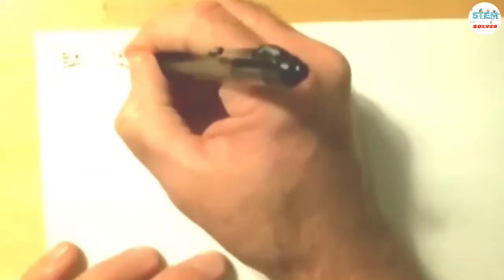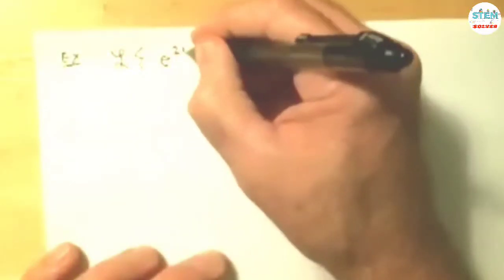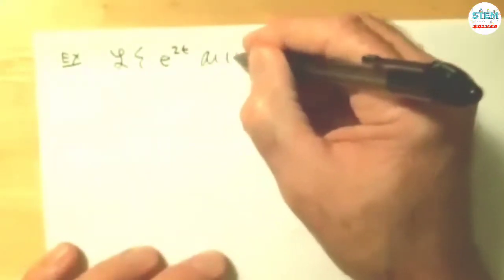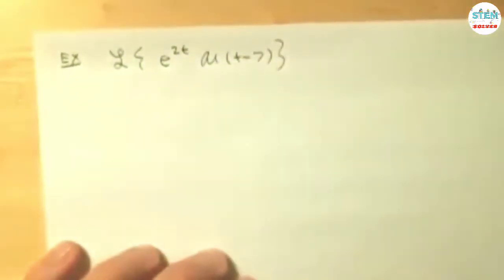So let's say you have a transform of this. I have e to the 2t times u of t minus 7.